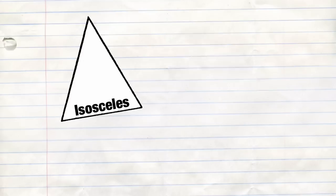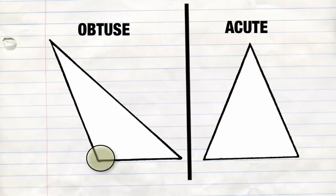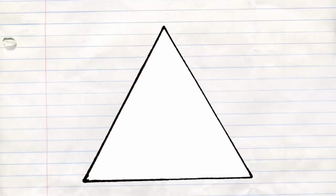Scalene, equilateral, acute, obtuse, or right triangle — but we won't know till we know just what that means. Someone tell me: no equal sides, or are there two or three? Are there angles greater than or less than 90? Or is there one that measures exactly? We'll always be triangles.